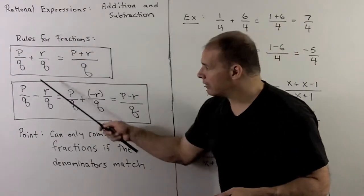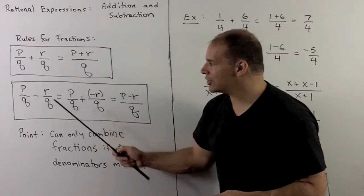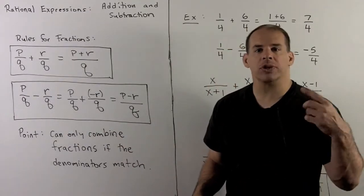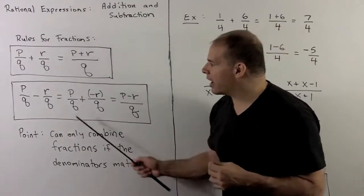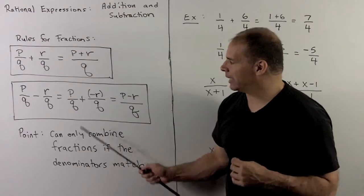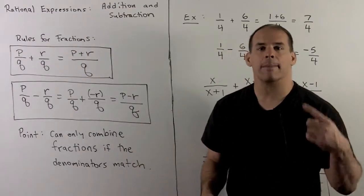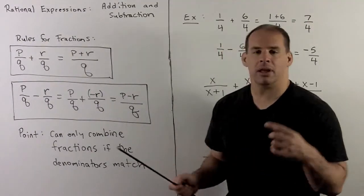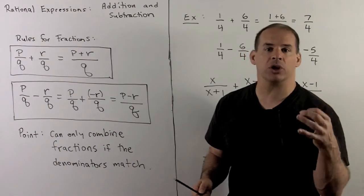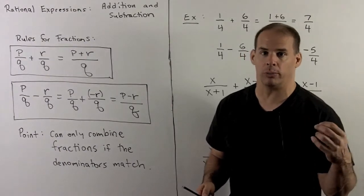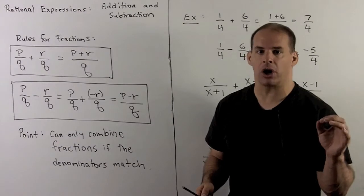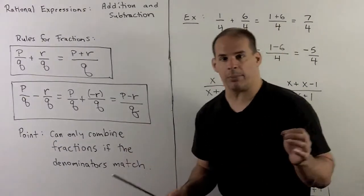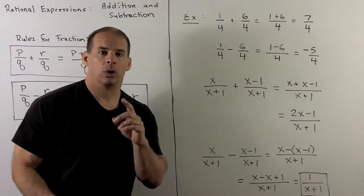For subtraction, same idea: P over Q minus R over Q equals P minus R over Q. It's worth inserting a middle step: rewrite P over Q minus R over Q as P over Q plus minus R over Q. When we work with polynomials, this step is going to guarantee that we're thinking about that minus sign and we distribute correctly through the polynomial in the numerator. It's a common place where errors occur.